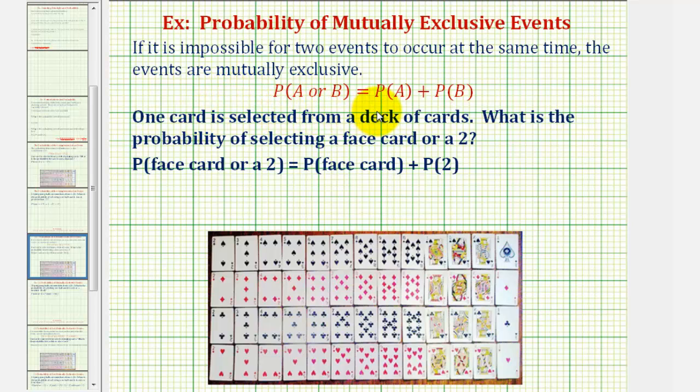So if events A and B are mutually exclusive, then the probability of A or B is equal to the probability of A plus the probability of B.